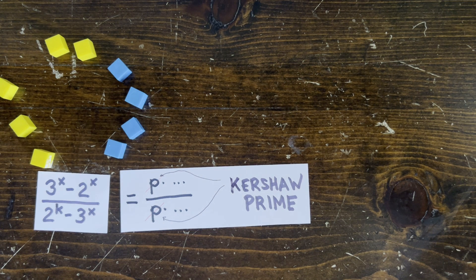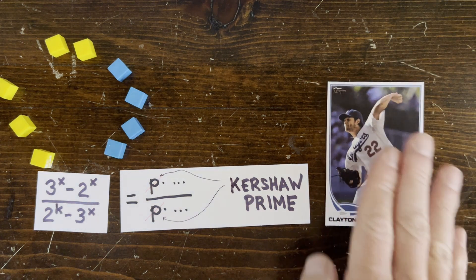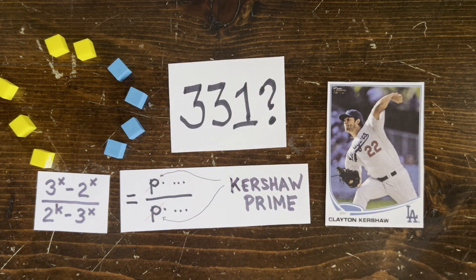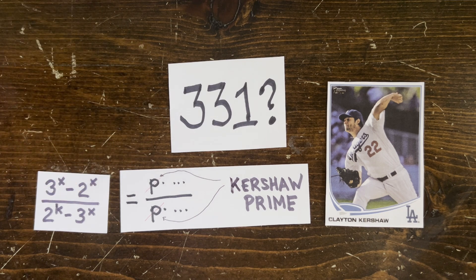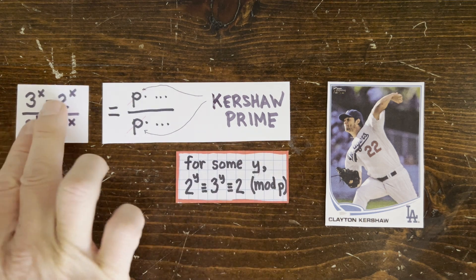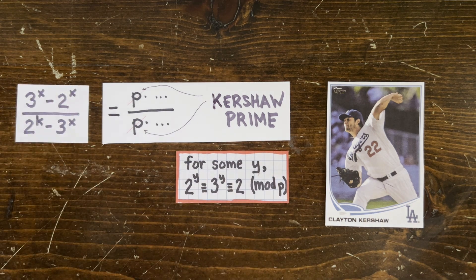So last time we called those Kershaw primes and the only Kershaw prime we could find was 331. And we found that p only divides both things if 2 to the y is congruent to 3 to the y is congruent to 2 mod p for some y.